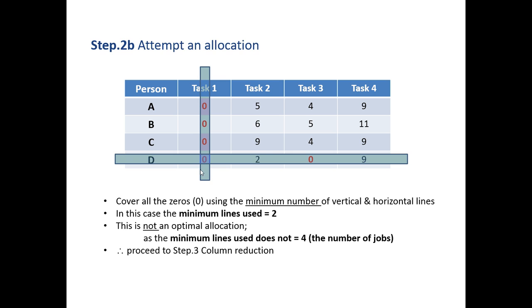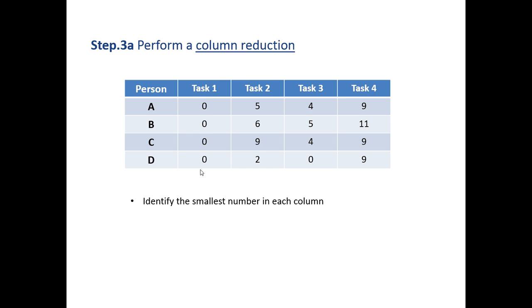Let's proceed to column reduction. The numbers we have here we now want to perform a column reduction. In each column we identify the smallest number. In the first column, 0 is the smallest; in the second column, 2 is the smallest; in the third column, 0 is the smallest; and in the fourth column, 9 is the smallest.